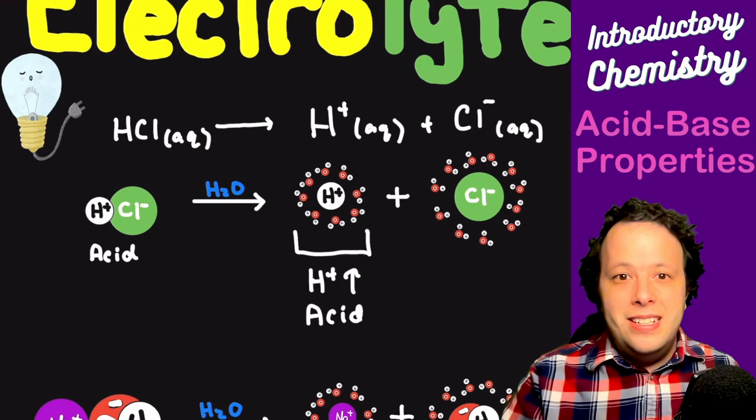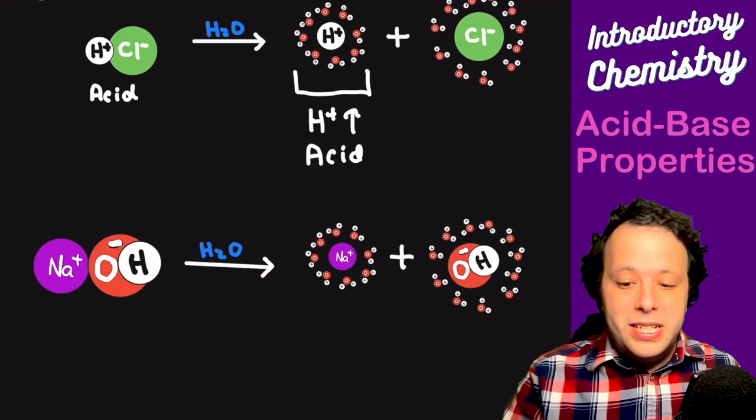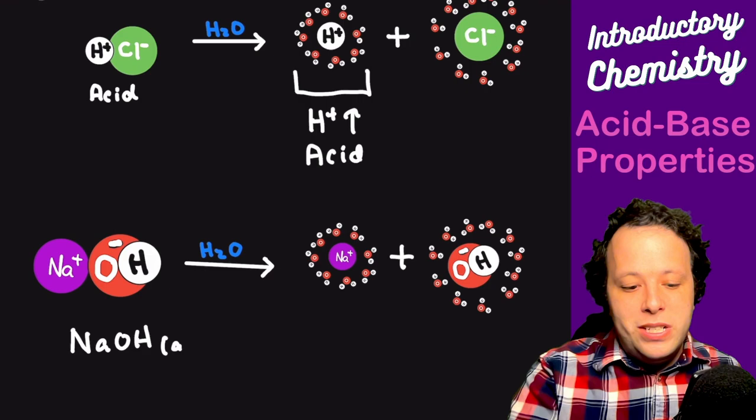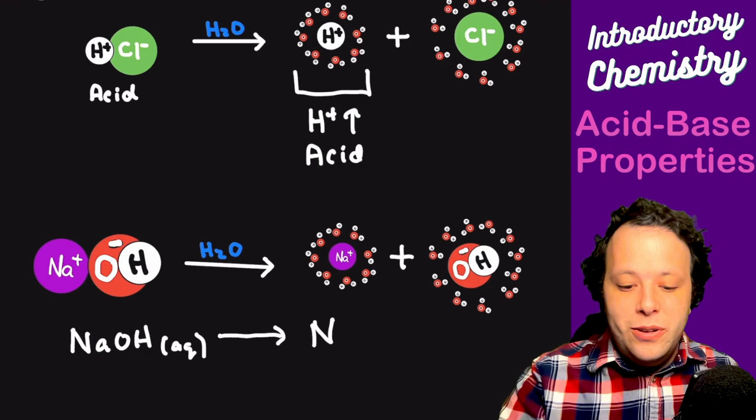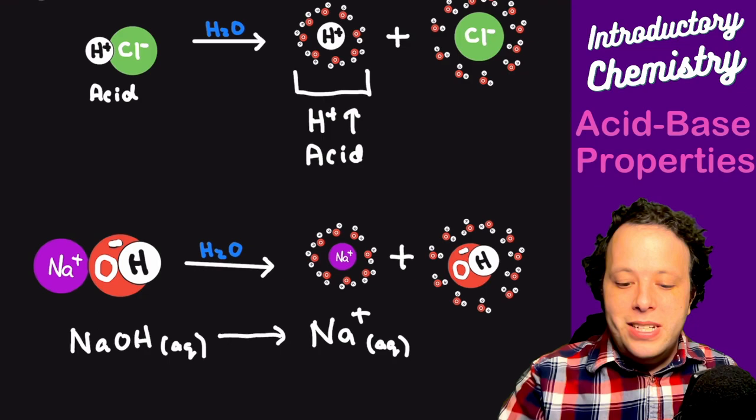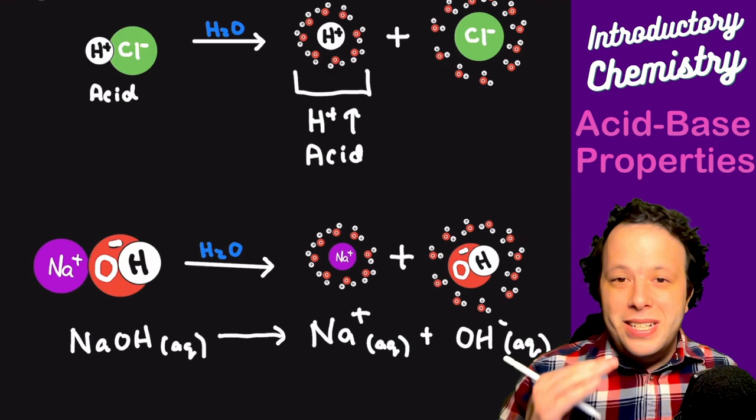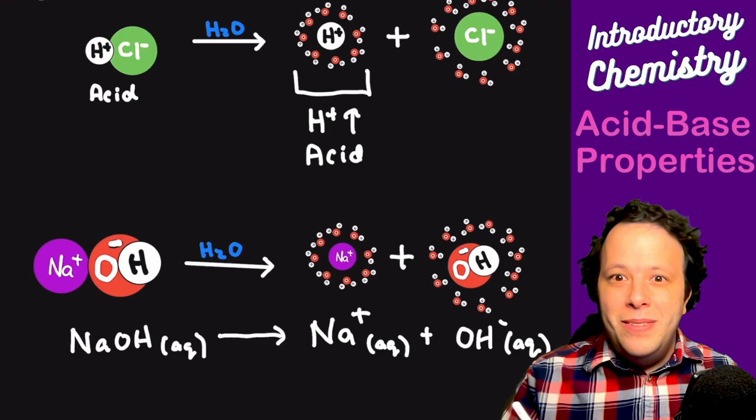For an Arrhenius base, take sodium hydroxide: if you throw sodium hydroxide in water, it's going to dissociate or break into its individual ions, which are Na+ and OH-, and they are both going to be aqueous. They will be solvated by water, which causes them to dissociate — this is what we refer to when we talk about different electrolytes in solution.